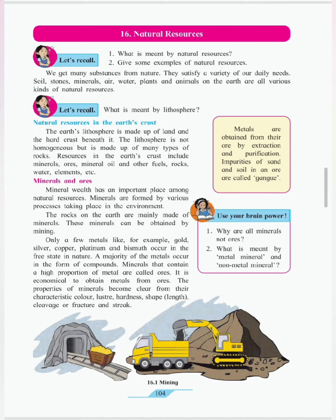Minerals and ores can be obtained after mining. Few metals, for example, gold, silver, copper, platinum and bismuth, occur in the free state in nature. Minerals are formed by various processes taking place in the environment. A majority of the metals occur in the form of compounds.